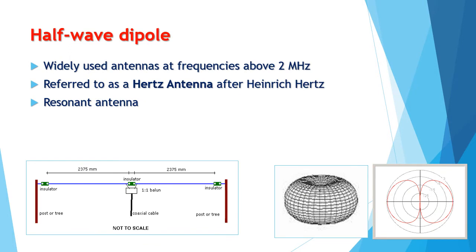Let's take a look at the half-wave dipole antenna. This is one of the most widely used antennas at frequencies above 2 megahertz. This is referred to as a Hertz antenna, after Heinrich Hertz, who was the first to demonstrate the existence of electromagnetic waves. A Hertz antenna is a resonant antenna — it is a multiple of quarter wavelengths long and open-circuited at the far end, which will radiate electromagnetic waves.